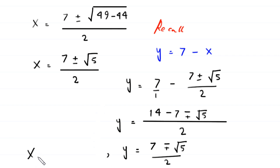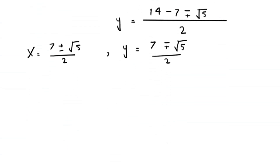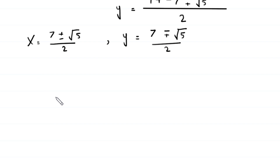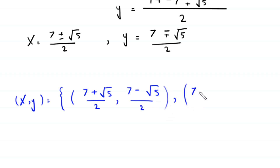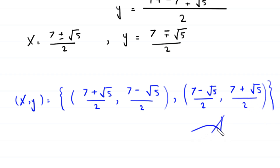We found x equals (7 plus or minus root 5) over 2. From here we get two pairs of solutions: the first pair is x equals (7 plus root 5)/2 and y equals (7 minus root 5)/2; the second pair is x equals (7 minus root 5)/2 and y equals (7 plus root 5)/2. This is the final answer.